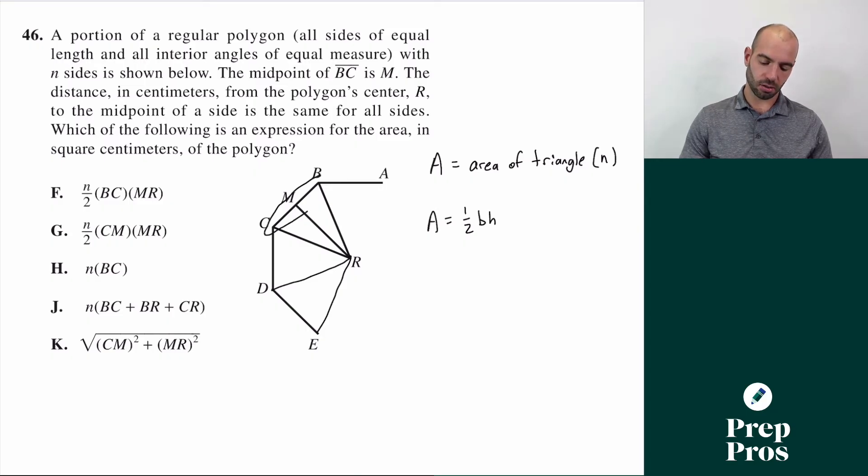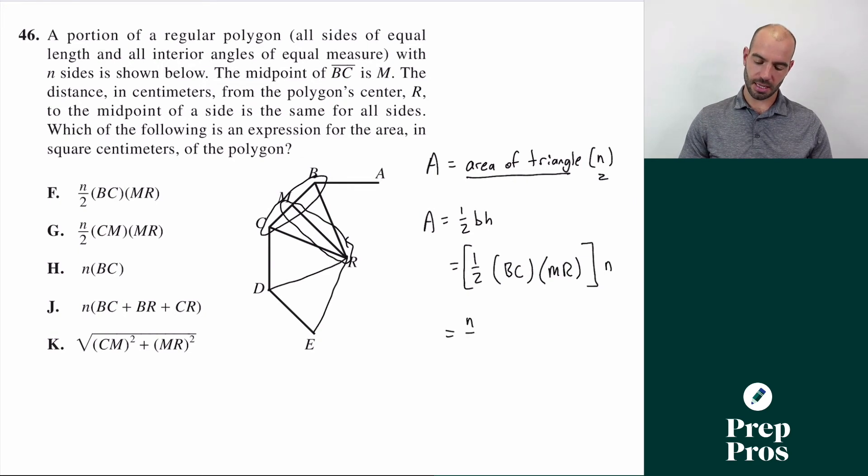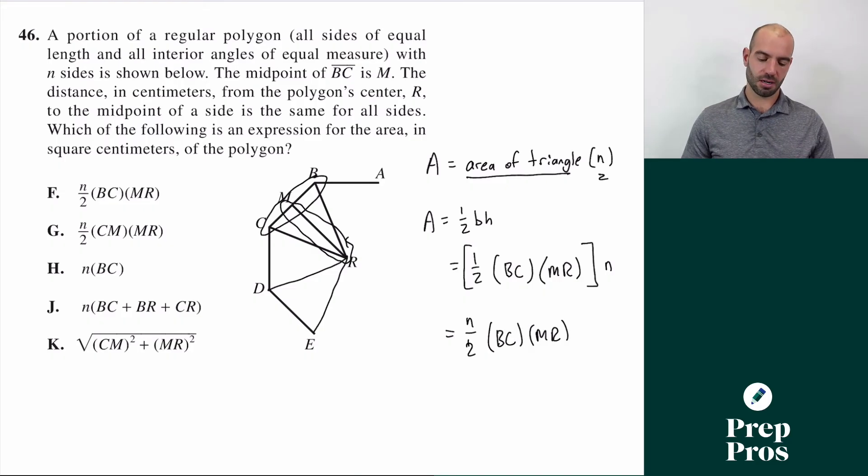What we can do is we can use one half base times height. So the base of this whole triangle BCR is the length of BC. So it's one half length BC times height. We can use this altitude, this vertical portion is the height, MR. So that's going to be the area of our triangle. We want to do the area of each triangle times the number. So I want to multiply this whole thing by N triangles. I could rewrite this as N over two times BC times MR, which is how on this really tricky question, we get to F as our correct answer.